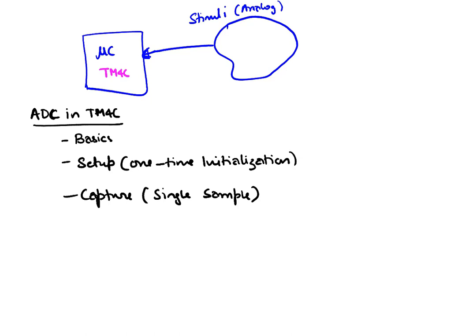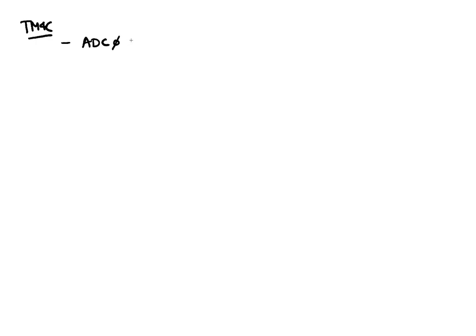Let's first understand the basics of ADC on TM4C. On our microcontroller there are actually two ADC chips: ADC 0 and ADC 1. We will mainly be using ADC 0 — these are two separate hardware components that can be used for performing ADC.